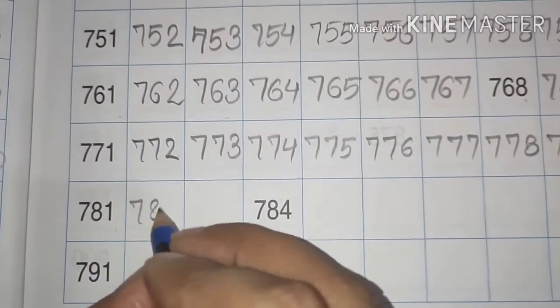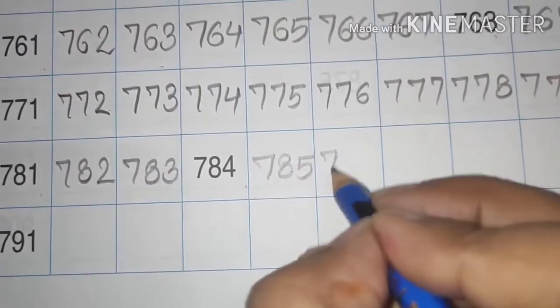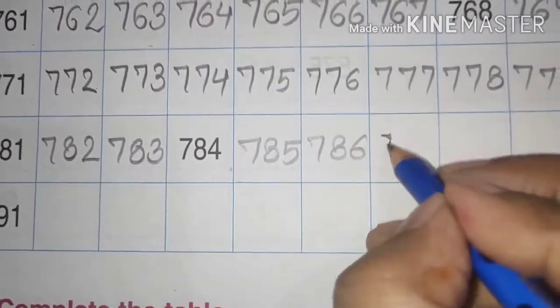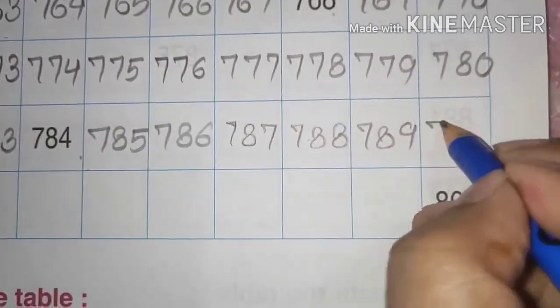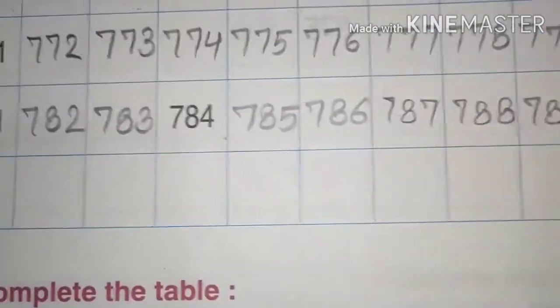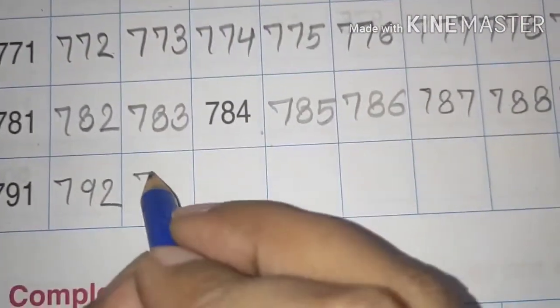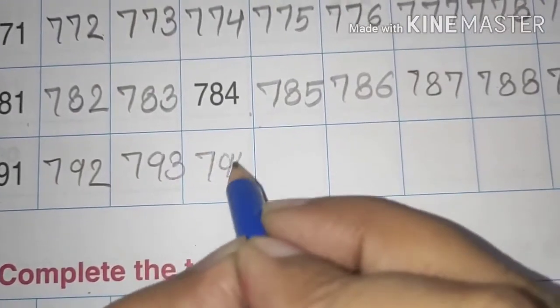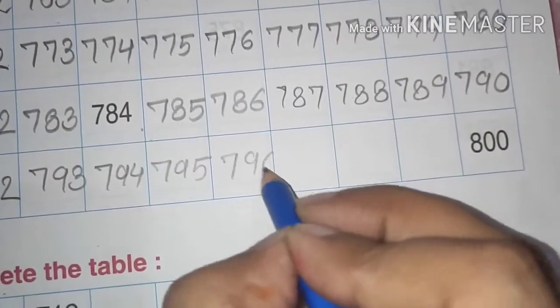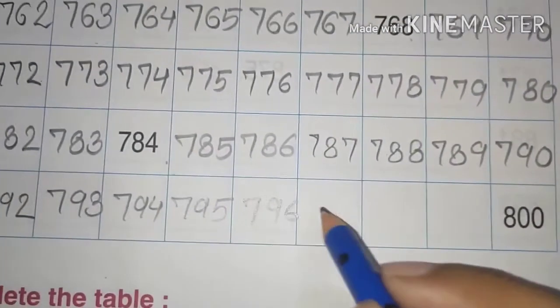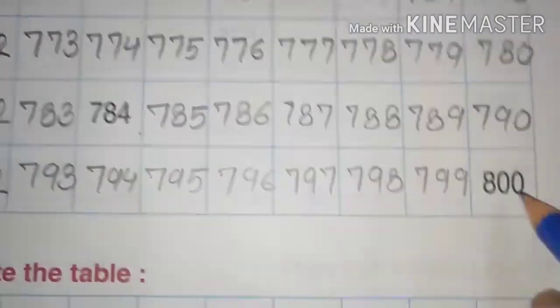781, 782, 783, 784, 785, 786, 787, 788, 789, 790. Okay, then 791, 792, 793, 794, then 795, 796, 797, 798, 799, 800.